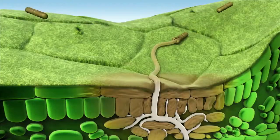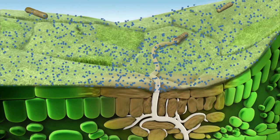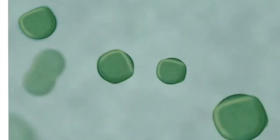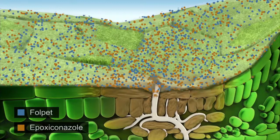Folpet is a multi-site protectant with no known resistance. Acting on three different cellular levels, Folpet disrupts cell production, inhibits the division of the germ tube, and interferes with the energy production of the fungus.